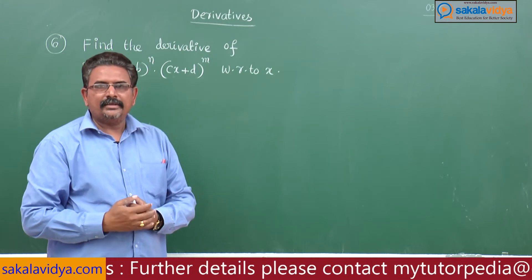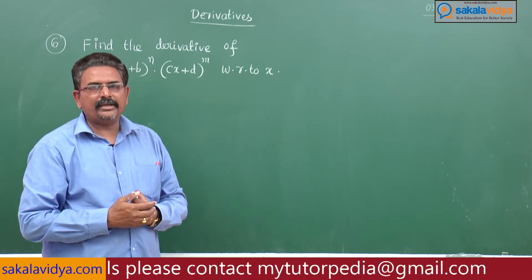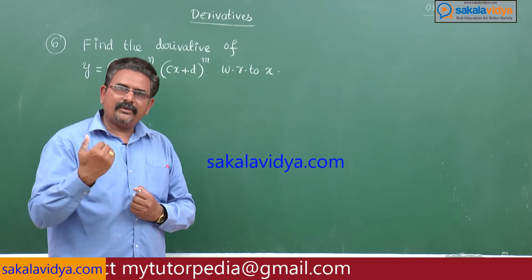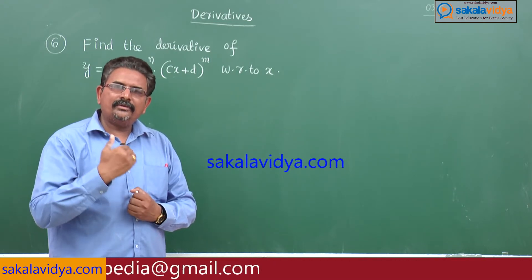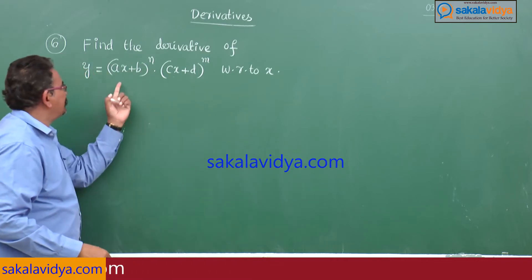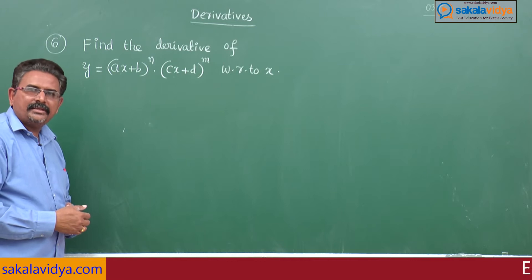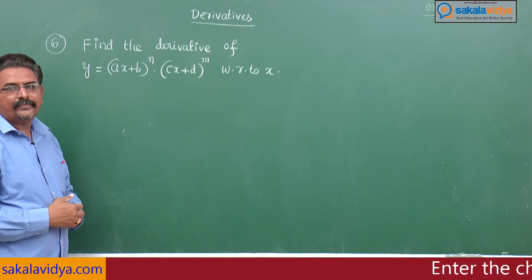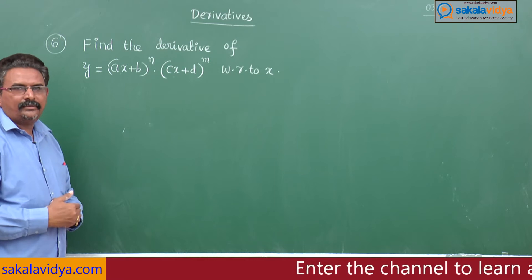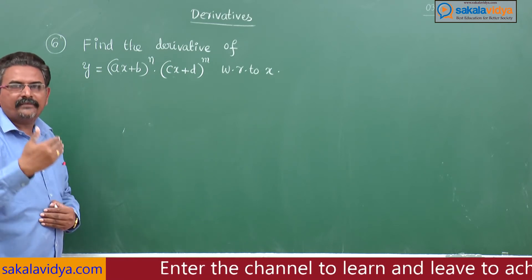That means the UV rule has to be applied here. But before applying the UV rule, we should know the derivative of (ax + b)^n and (cx + d)^m. Let us first discuss how to evaluate those derivatives.